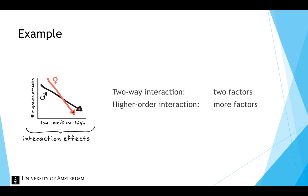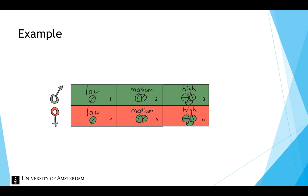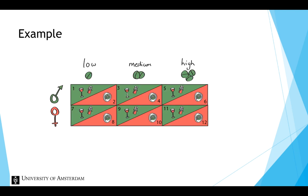Suppose we add diet as a factor with two conditions: a normal diet and a no-fun diet that eliminates all chocolate and red wine. So now we have three factors: dosage, gender, and diet. This requires that each of the six groups is split in two. Half of the participants are being assigned to the normal diet and half to the no-fun diet.